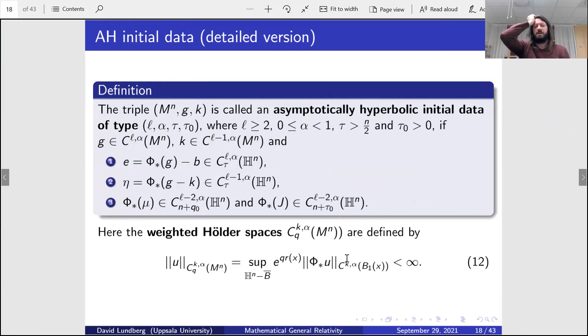In particular, when we define our asymptotically hyperbolic initial data, we will have that in mind. So here, there are a few parameters and details. We have a triple where l is an integer, alpha is some real number between zero and one, and tau is at least n over 2 and tau is positive. We have l derivatives, and then the l-th derivative is alpha-Hölder continuous. For the metric and k, which is of course one derivative less, we consider e here. We have this diffeomorphism at infinity, so we can push forward the metric, push it down to R^n minus the closed ball. The definition then is that the difference of that minus the hyperbolic metric is in this space. And similarly this difference here.